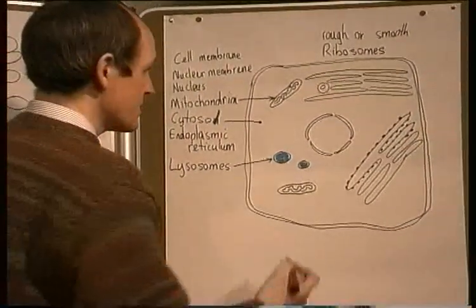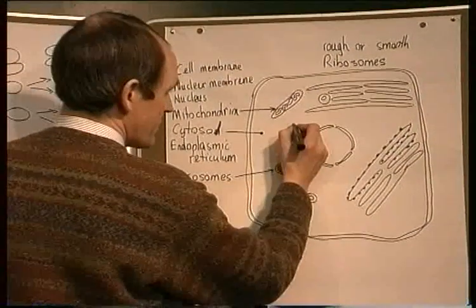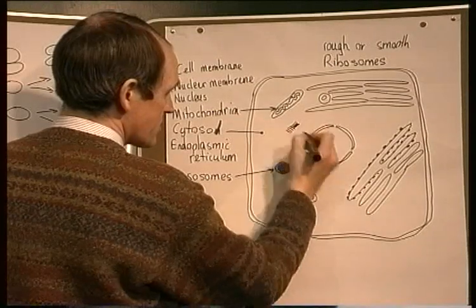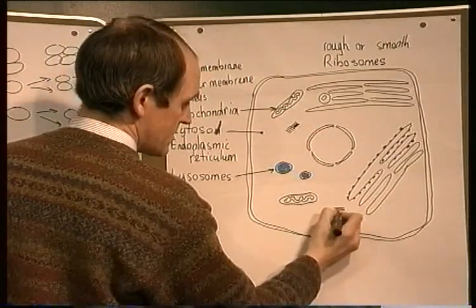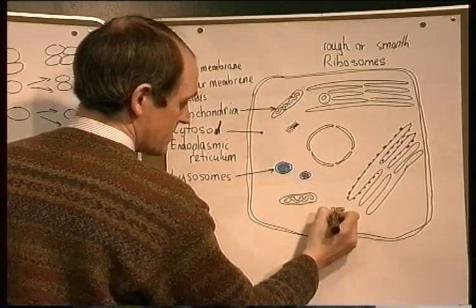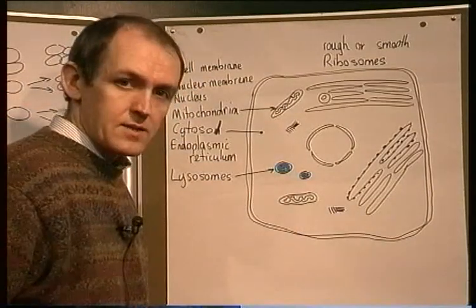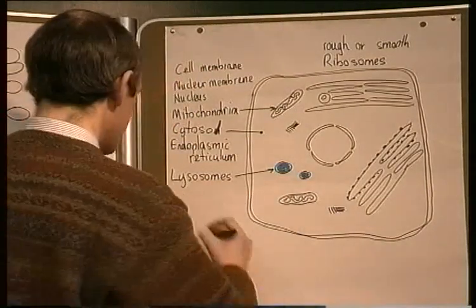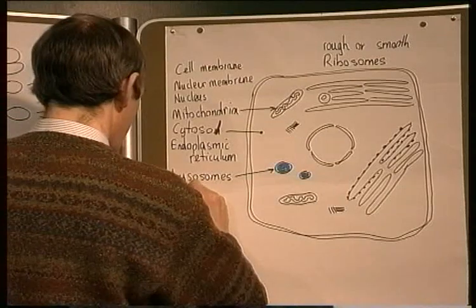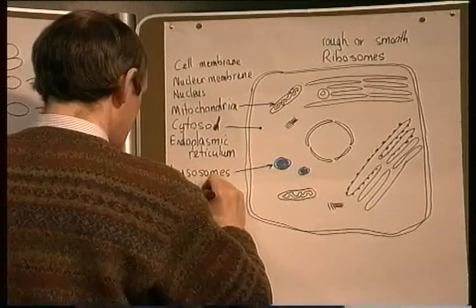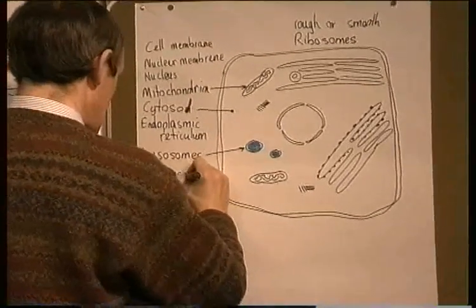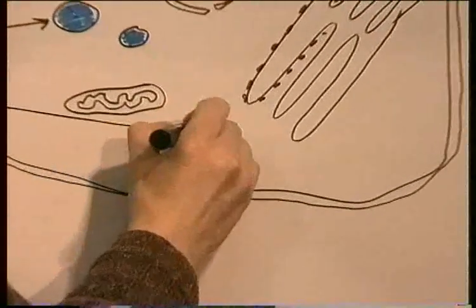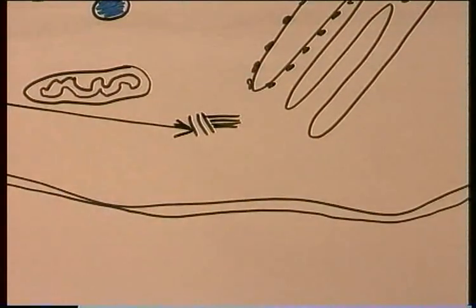Other structures that you can see, if you look carefully, are two spindly-like structures in the cytoplasm, and these are referred to as centrosomes — small spindly-looking structures.